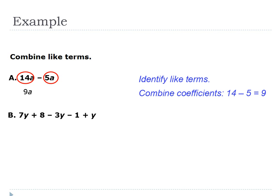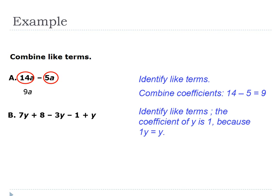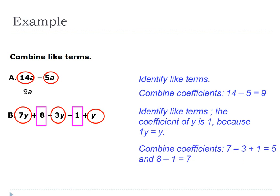The next expression is 7Y plus 8 minus 3Y minus 1 plus Y — that expression has five terms separated by plus and minus signs. I have to identify like terms. I see variable Y's, and remember a lone Y means its coefficient is 1. Combining 7Y minus 3Y plus Y: seven minus three plus one is five, giving 5Y. Then combining the constants: 8 minus 1 is 7. The simplest form is 5Y plus 7. Go ahead and write that in your notes now.